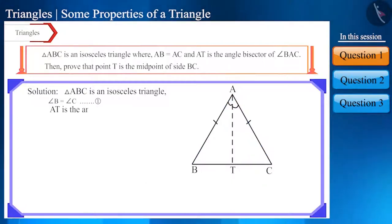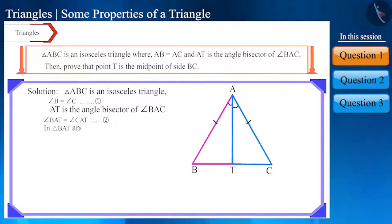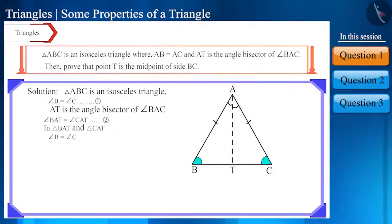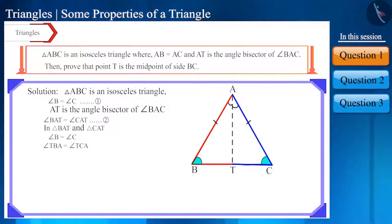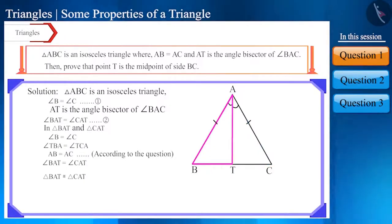According to the question, AT is the angle bisector of angle BAC. Therefore, these two angles will be equal. Now look at triangles BAT and CAT. Angle B and angle C are equal — we can write angle B as angle TBA and angle C as angle TCA. It's given that side AB is equal to side AC, and angle BAT is equal to angle CAT. Therefore, by the ASA rule, these two triangles are congruent.